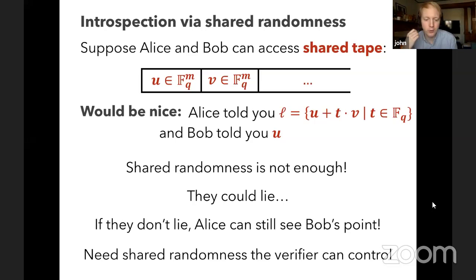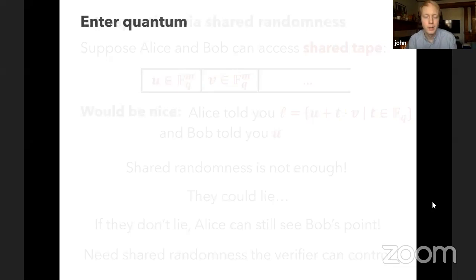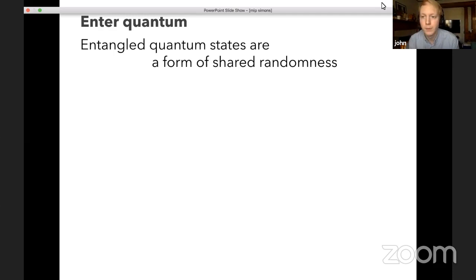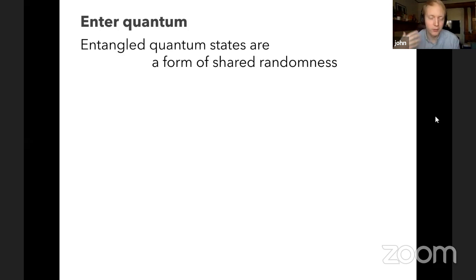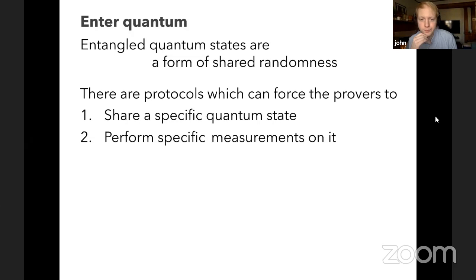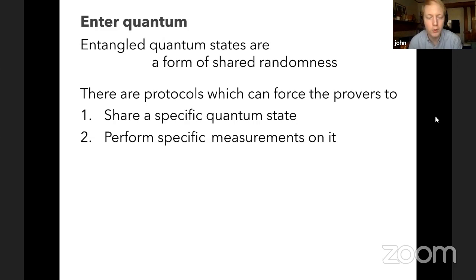Another even more fundamental problem: even if they're being honest, they can see each other's questions. Alice can see Bob's point, and Bob knows both u and v, so he knows Alice's line L. If the two provers know each other's questions, we've defeated the entire purpose of having multiple provers — they can now act as a single prover. What we really need is a source of shared randomness that the verifier can control and that prevents these cheating strategies.